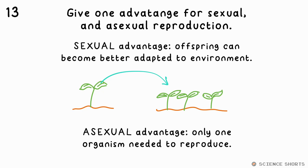The offspring of organisms that reproduce sexually can be better adapted to their environment. Asexual reproduction results in clones being made, but the benefit to this is that only one organism is needed.